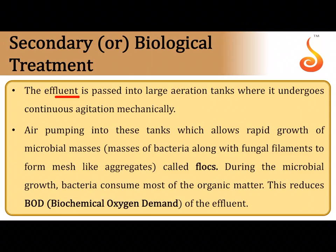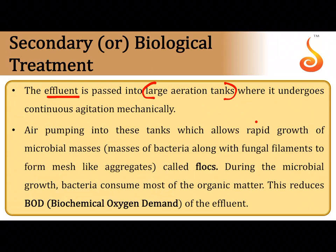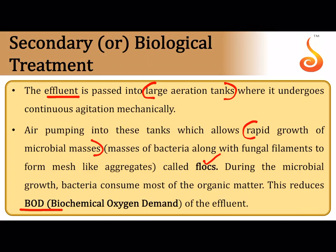In secondary treatment, the effluent from primary treatment is passed into large aeration tanks where a lot of oxygen is pumped in. This causes rapid growth of aerobic bacteria and fungi already present in the sewage. These microbes grow and form tangled masses of fungal hyphae with bacterial cells, called flocs. The aerobic flocs feed on organic matter in the sewage, converting it into simple inorganic substances like carbon dioxide and water, gradually reducing the biochemical oxygen demand (BOD) of the water.